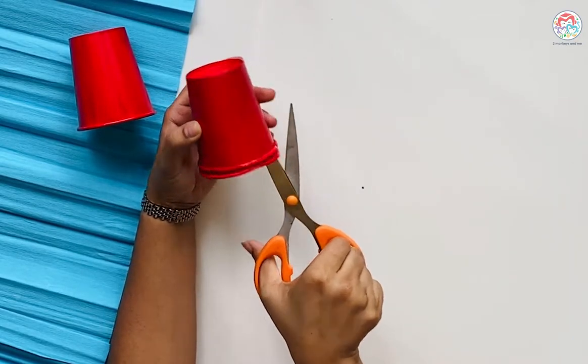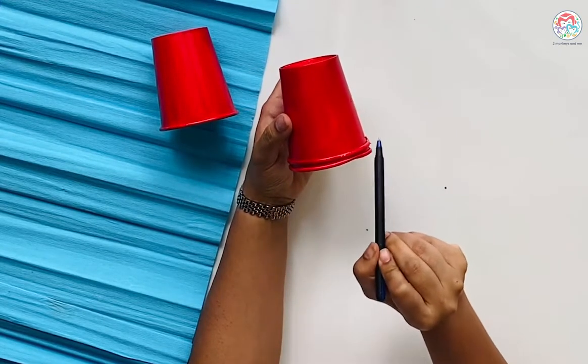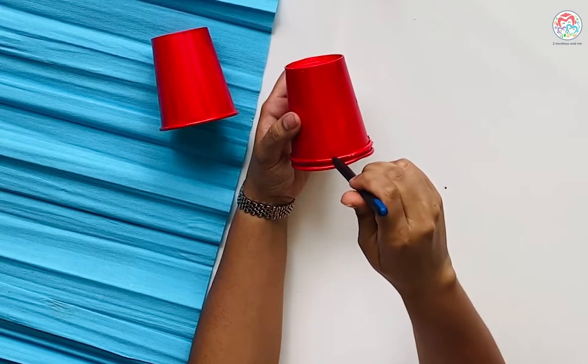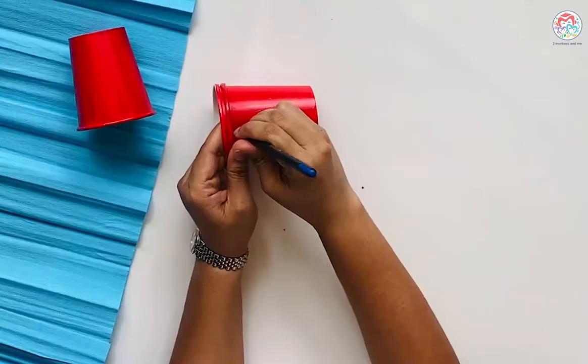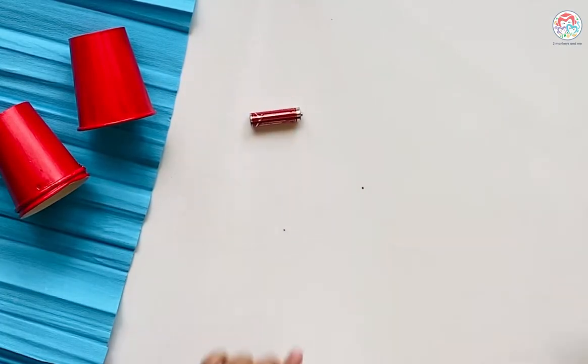Once you've made the slits, take a pen or sharp object and make a hole between the two corners where you made the slit. Gather your materials: a battery, a toothpick, rubber bands, and rope.